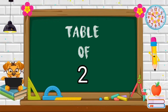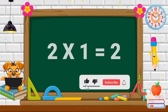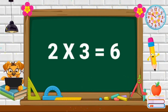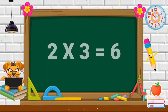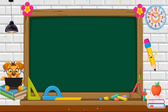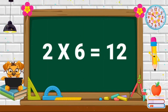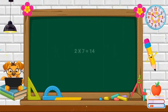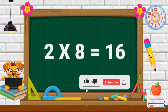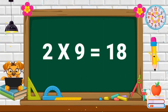Table of Two. Two ones are two. Two twos are four. Two threes are six. Two fours are eight. Two fives are ten. Two sixes are twelve. Two sevens are fourteen. Two eights are sixteen. Two nines are eighteen.